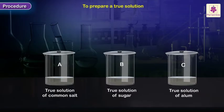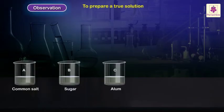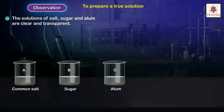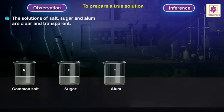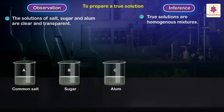Observation: The solutions of salt, sugar, and alum are clear and transparent. Inference: True solutions are homogeneous mixtures.